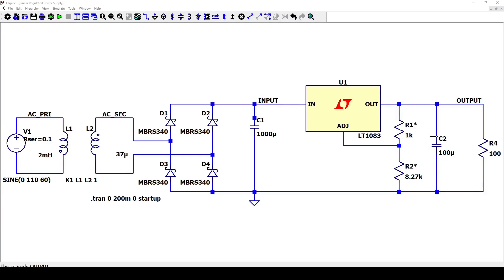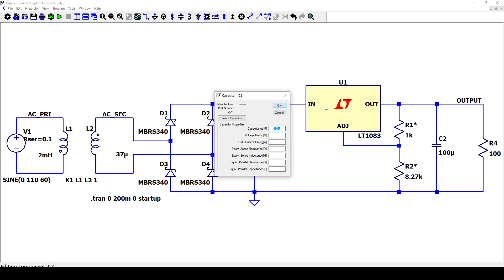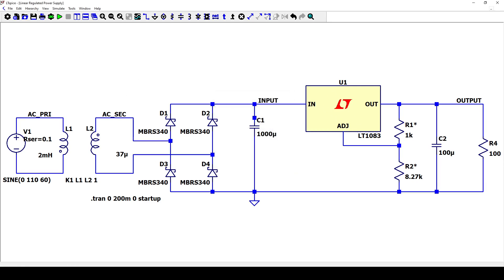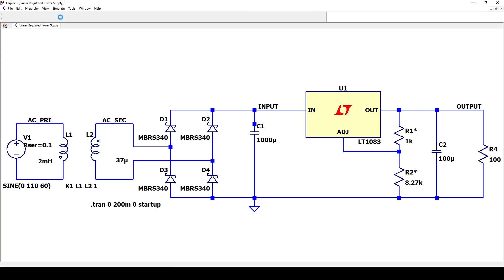The output capacitor is important here to make the output voltage smooth, and to support any transients caused by the load. Its value can be also calculated, but let's just take 100 microfarads in this example. Let's now launch the simulation and display some beautiful waveforms.